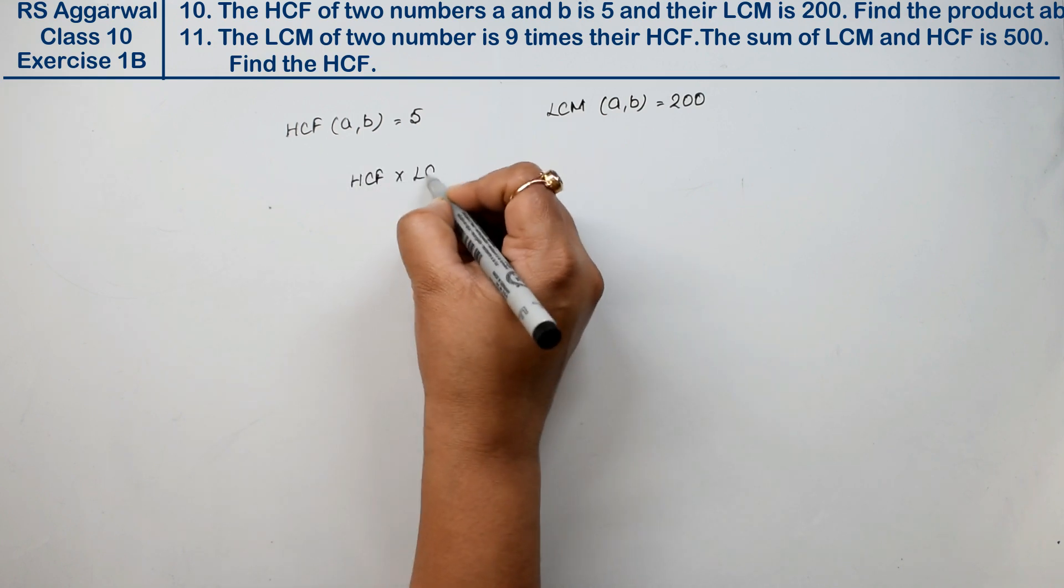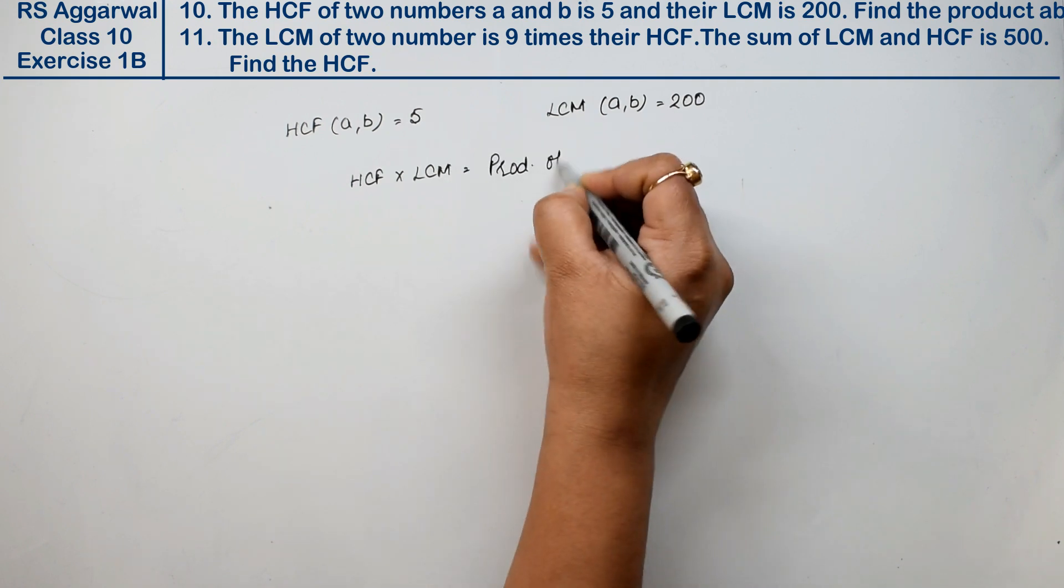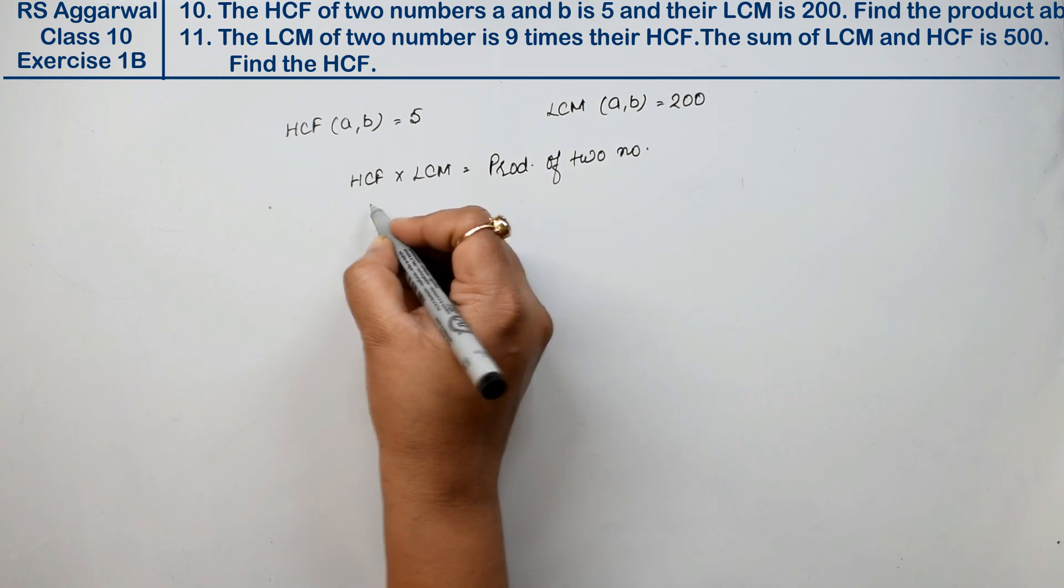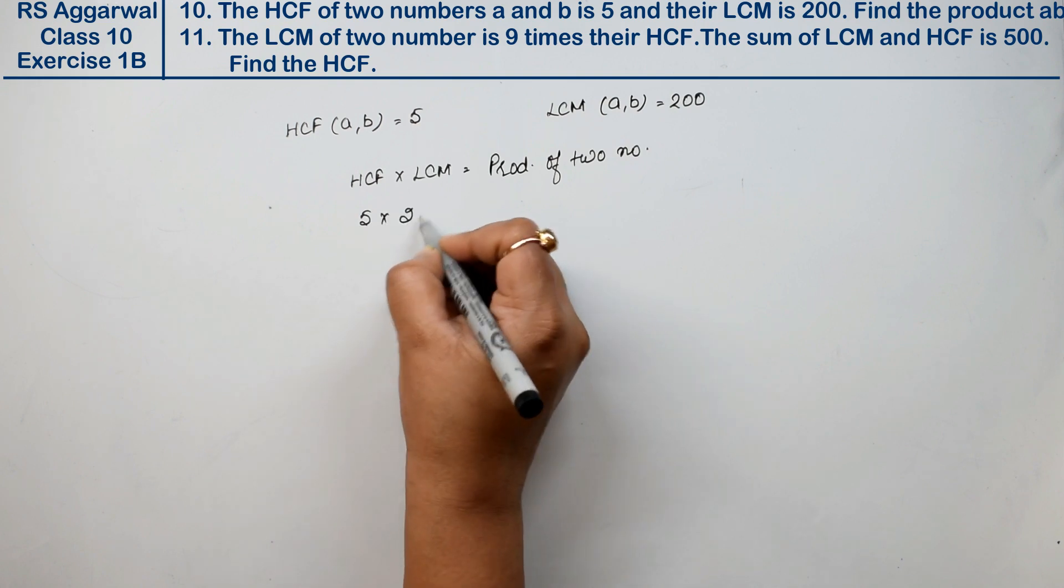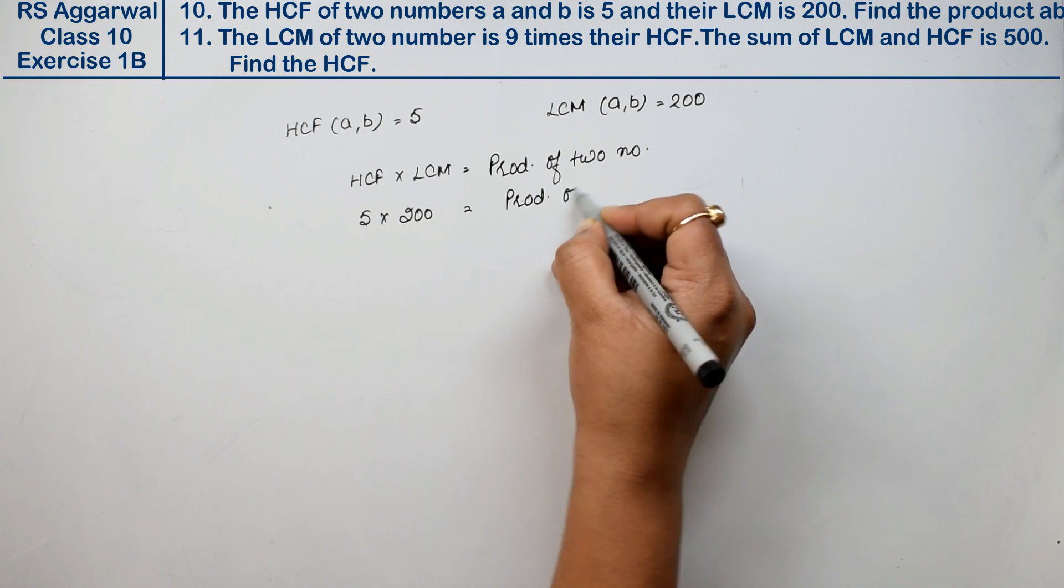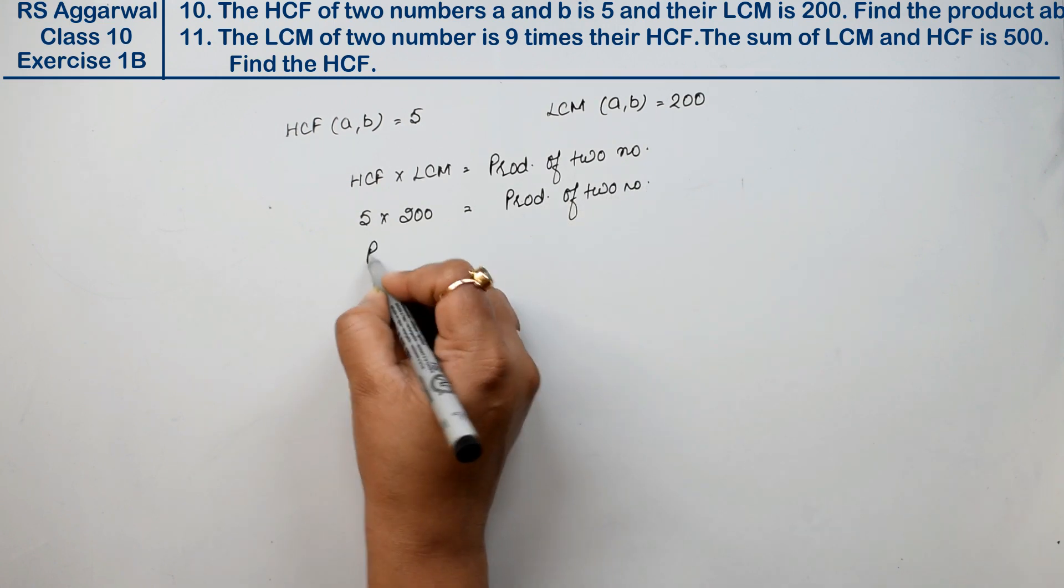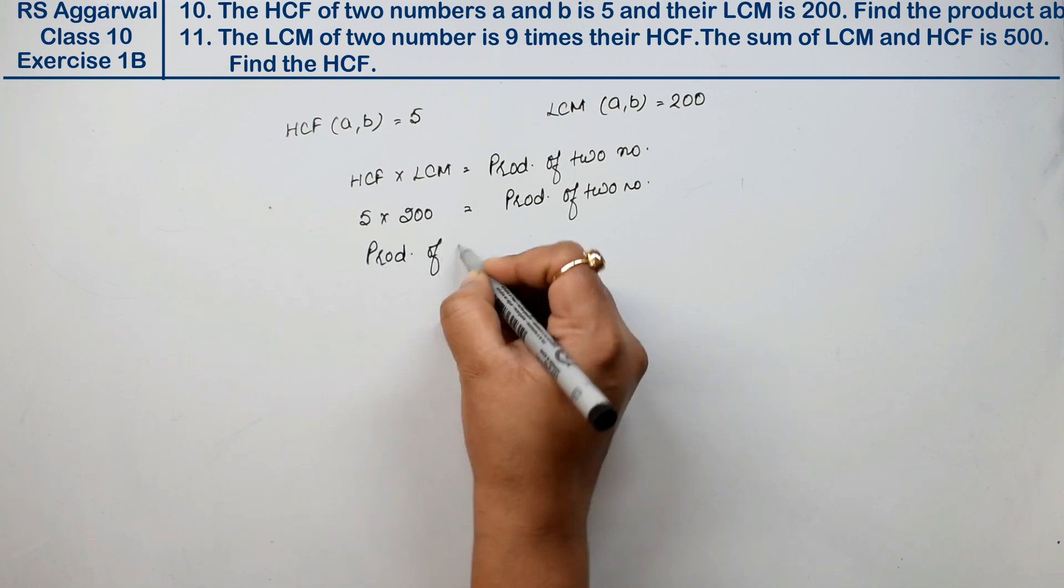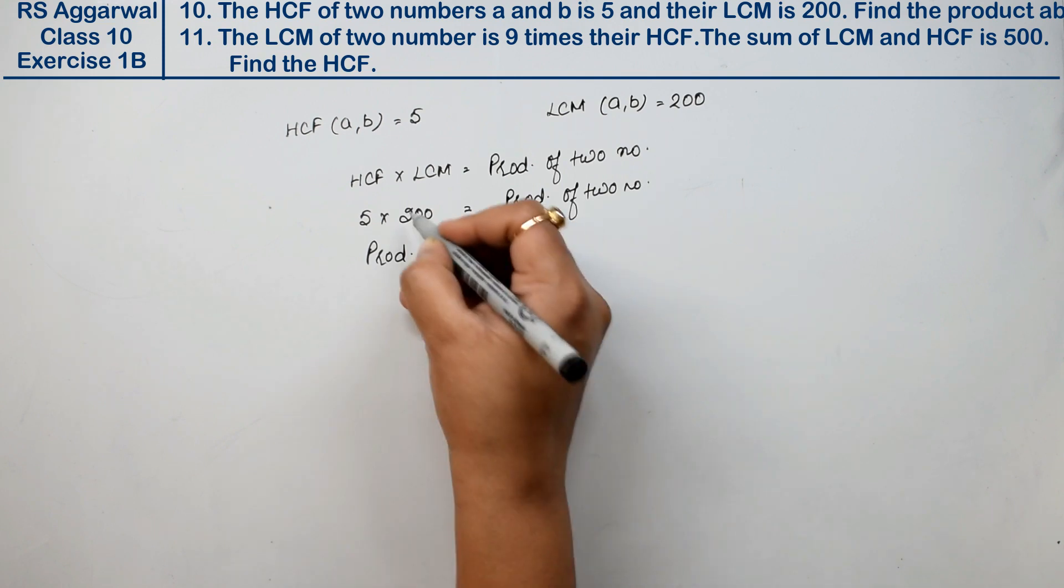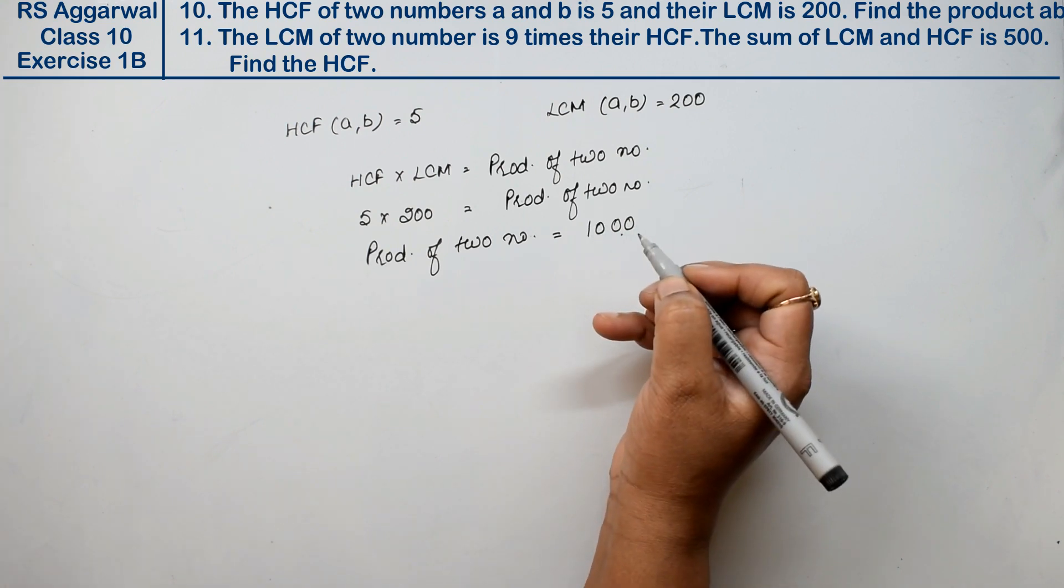HCF into LCM is equal to product of two numbers, right? So HCF is 5 and LCM is 200. Multiply these two to get the product of two numbers that we need to find. So product of two numbers is equal to 200 into 5, that is 1000 is the answer.